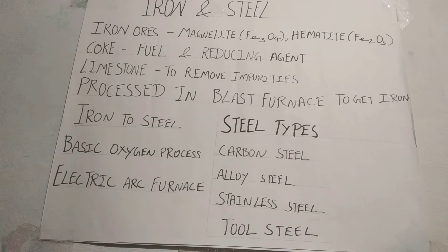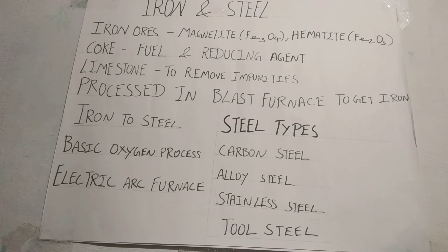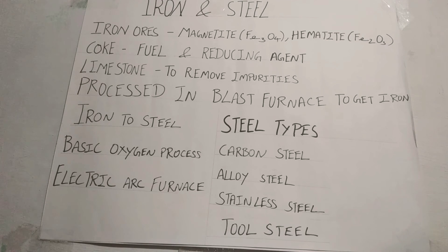Finally, molten iron and slag are drained separately. This iron contains a carbon level above 4% and other impurities such as sulfur, phosphorus, silicon, and manganese. The high carbon level makes the iron brittle. The impurities should be removed and the iron carbon percentage should be reduced to produce steel.